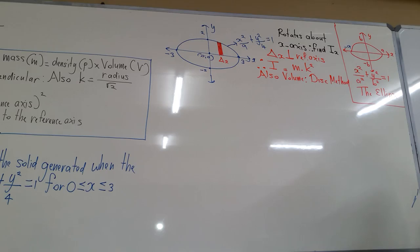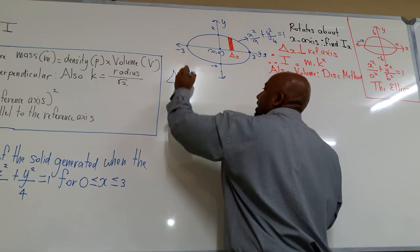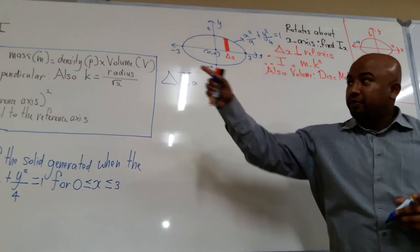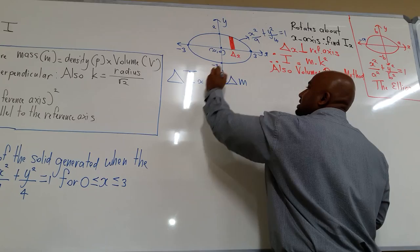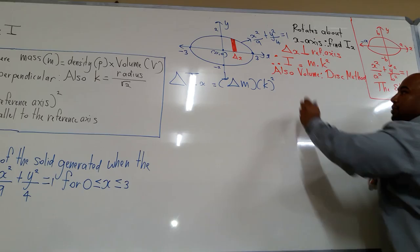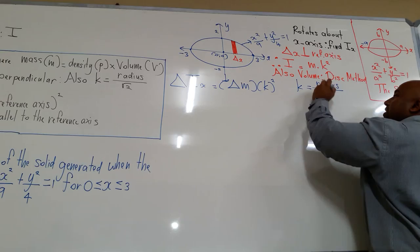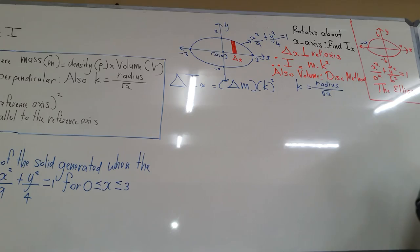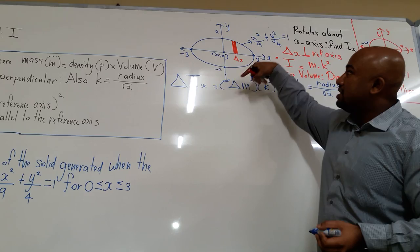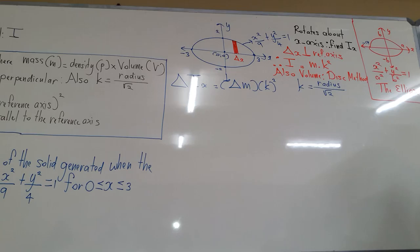We are finding delta Ix. Since it is perpendicular, we use the first formula: delta m times k squared, where k equals the radius divided by root 2. We are rotating around the x-axis, so the radius is measured in terms of y — that gives k equals y over root 2.